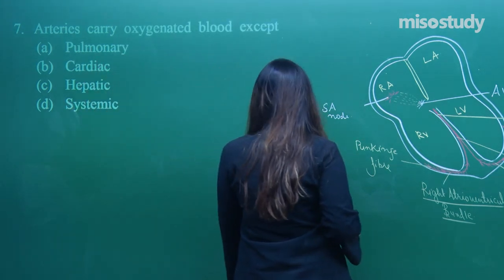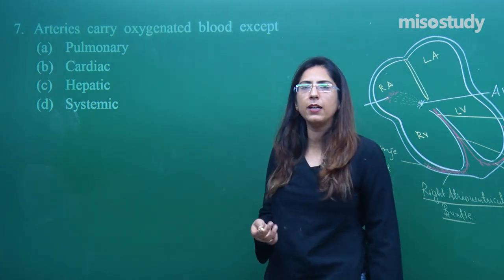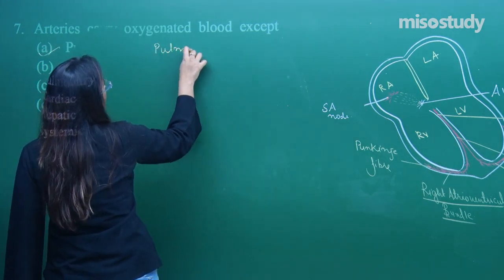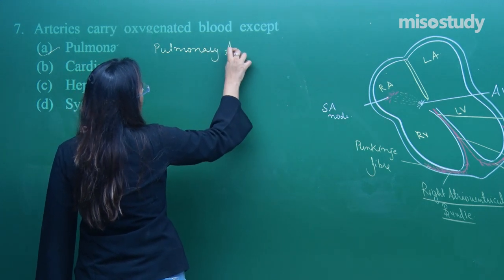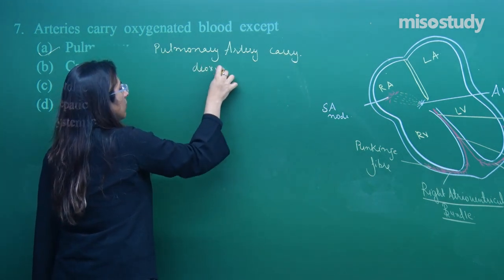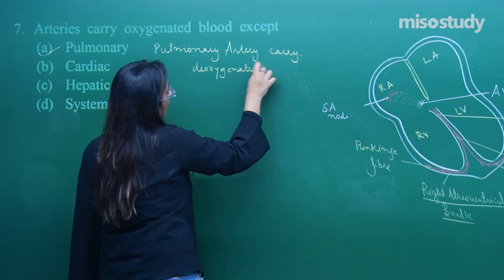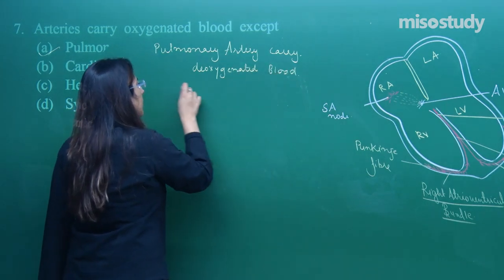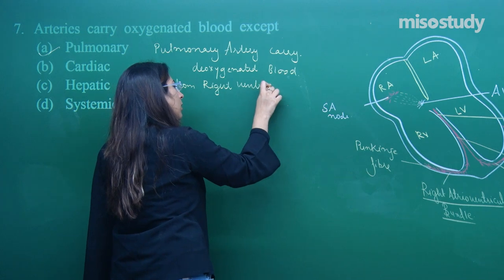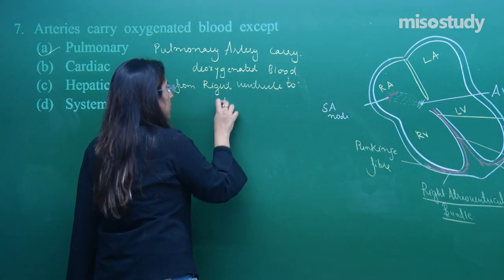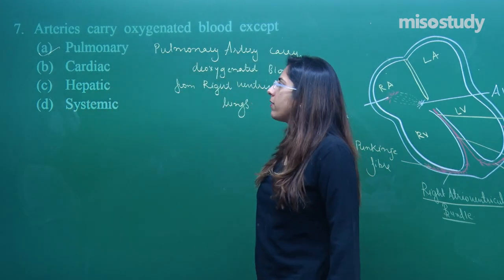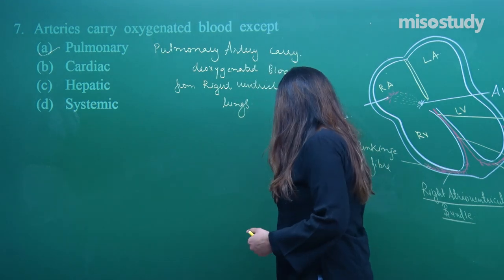Question number seven: arteries carry oxygenated blood — yes, arteries always carry oxygenated blood, with one exception: pulmonary arteries, which carry deoxygenated blood from the right ventricle to the lungs. For question number seven, option A is correct.